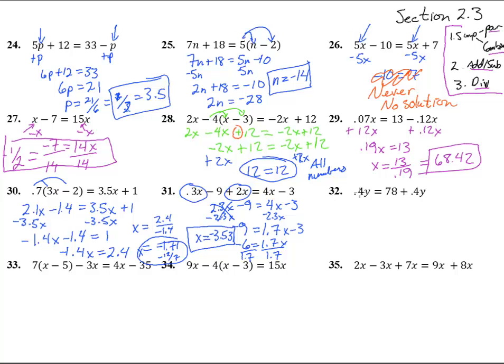For number 32, 0.4y equals 78 plus 0.4y. We have y's in two different locations. Let's try to get all the y's over to the left hand side since the numbers are over here. Subtract 0.4y there and subtract that from the other side here, and we end up with 0 equals 78. Doesn't that just embarrass you? That never happens. So that means we will not have a solution. No solution here.